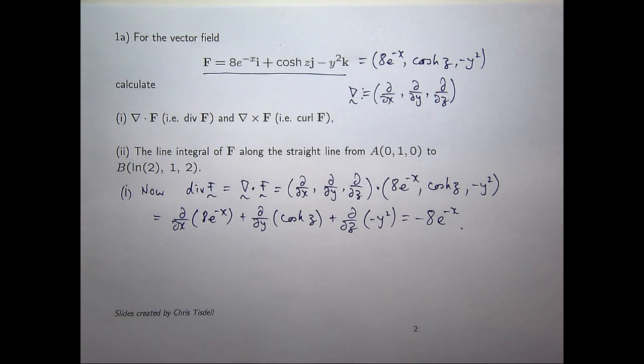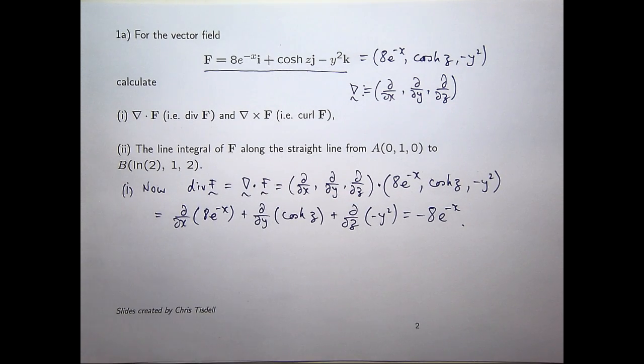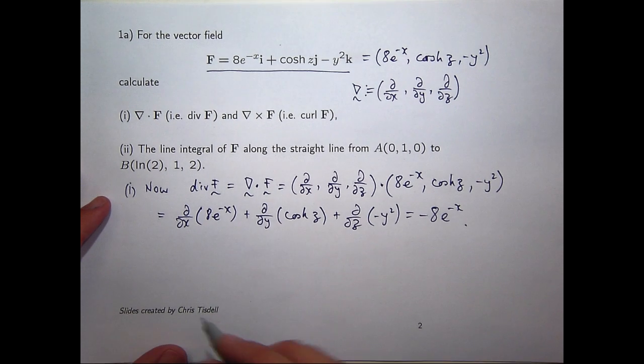Now remember, the divergence gives you a calculation of the tendency of the vector field to spread away from a point. What about the curl? The curl is slightly a bit more involved, and loosely speaking the curl has to do with the tendency of the vector field to rotate. So let's see if I can squeeze this in.